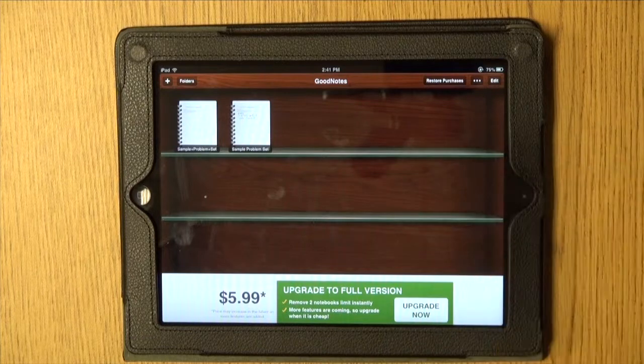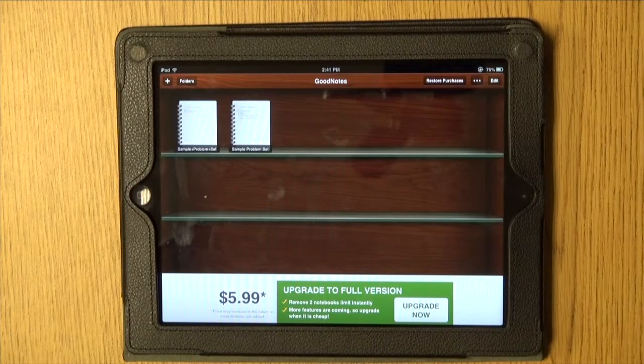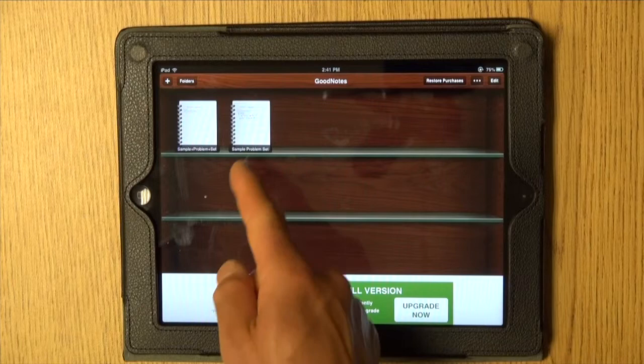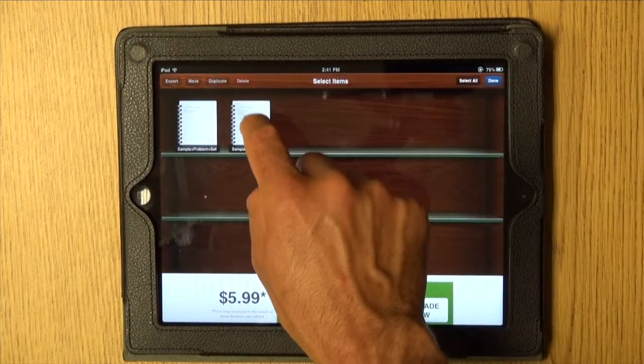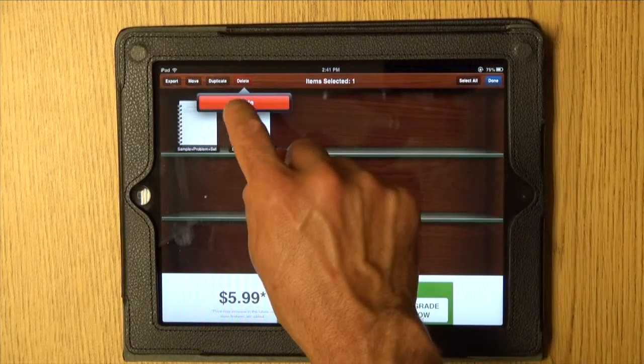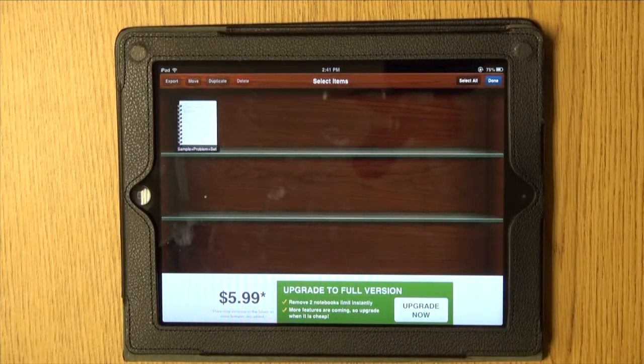If you really want to have an unlimited number, you can pay $6 and have a full app. That's not really necessary because you can simply delete existing documents to free up some space for a new one.